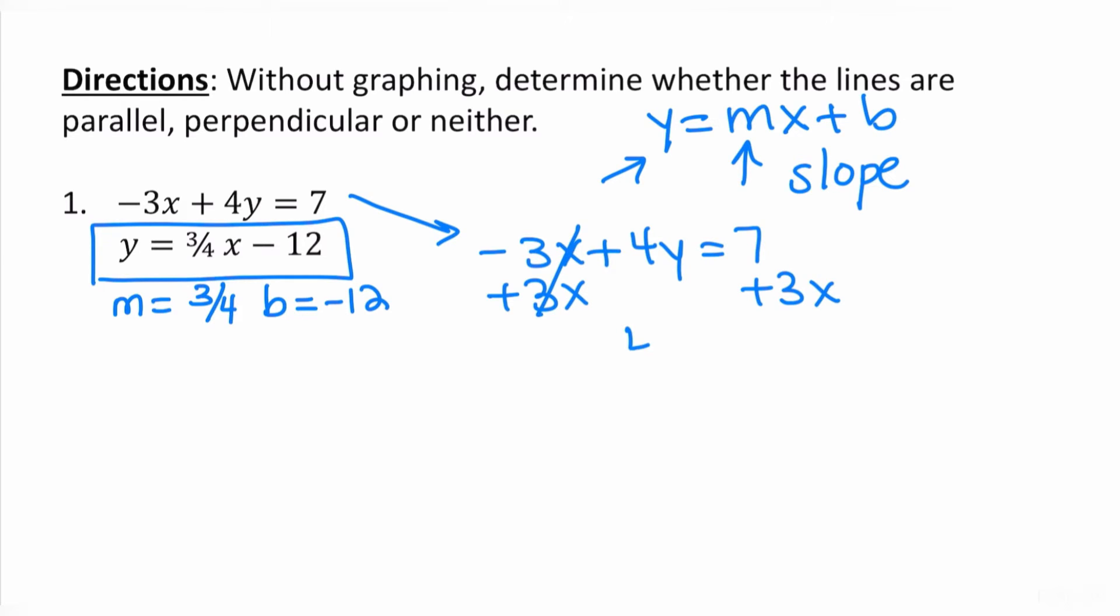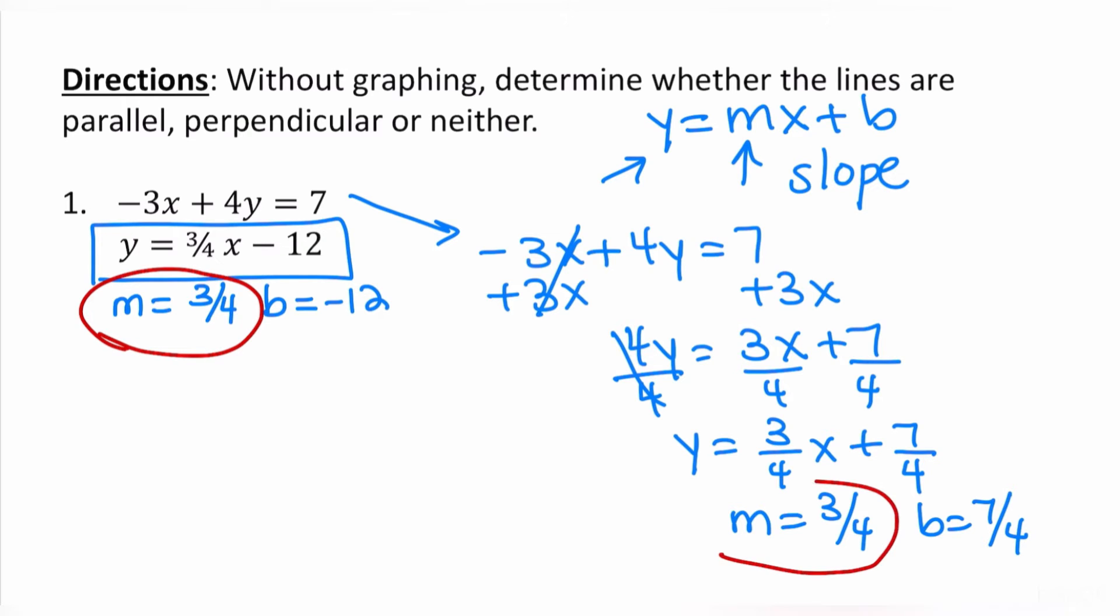That means let's add 3x to both sides. When we add 3x to both sides, I get 4y equals 3x plus 7. Divide both sides by 4, so I get y is equal to 3 fourths x plus 7 fourths. My slope is 3 over 4, and the y-intercept is 7 over 4. So when I compare these, I see that the first slope is 3 over 4. The second slope is 3 over 4. They're exactly the same. The y-intercepts are different, which means these are actually two different lines. And now I know that these lines are parallel.